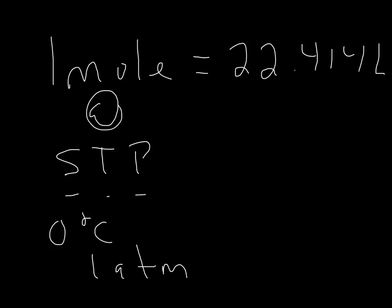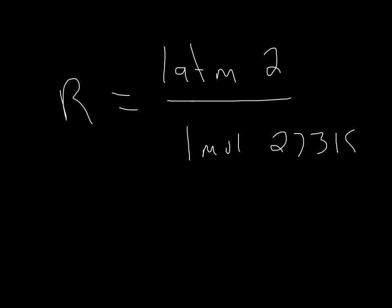One mole of gas under this set of conditions has a volume of 22.414 liters. So if that's the case, and it is, if we have one mole of a gas, one mole of gas at zero degrees Celsius, which is 273 Kelvin, and a pressure of one atmosphere, and since it's one mole of gas under the standard conditions, the volume is 22.414 liters.